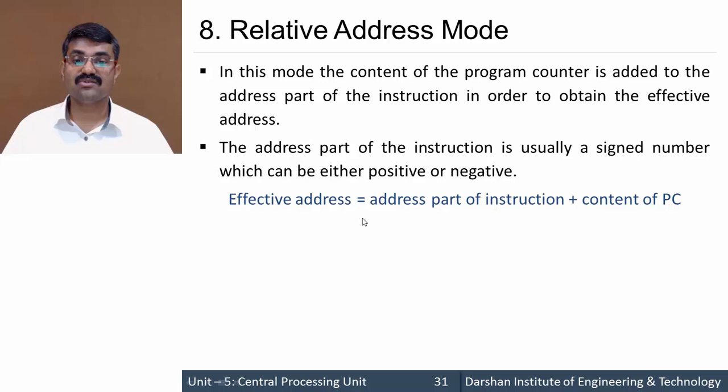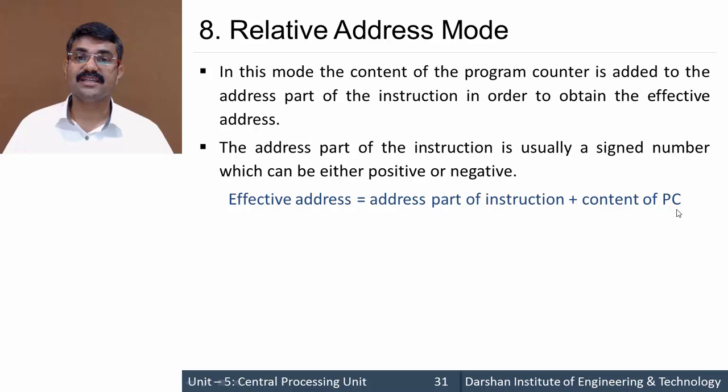In relative addressing mode, the address part of the instruction is a signed number — it can be either positive or negative. However, the content of the PC can never be signed, because the PC contains an address and addresses are never negative.